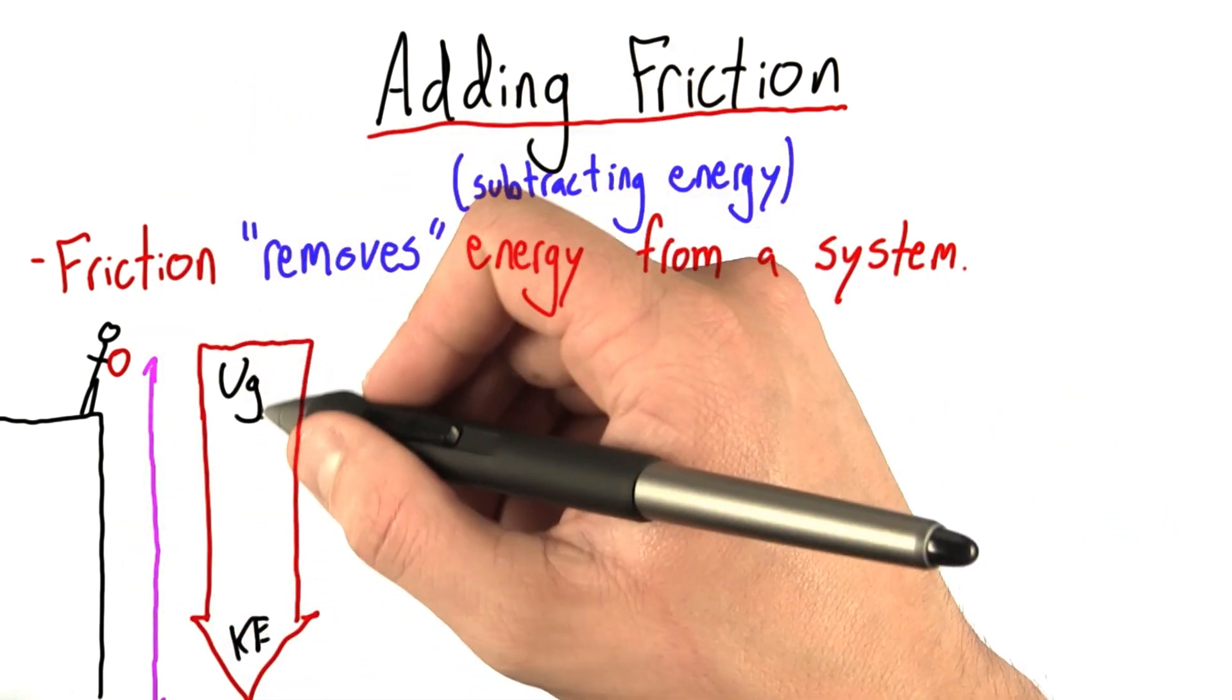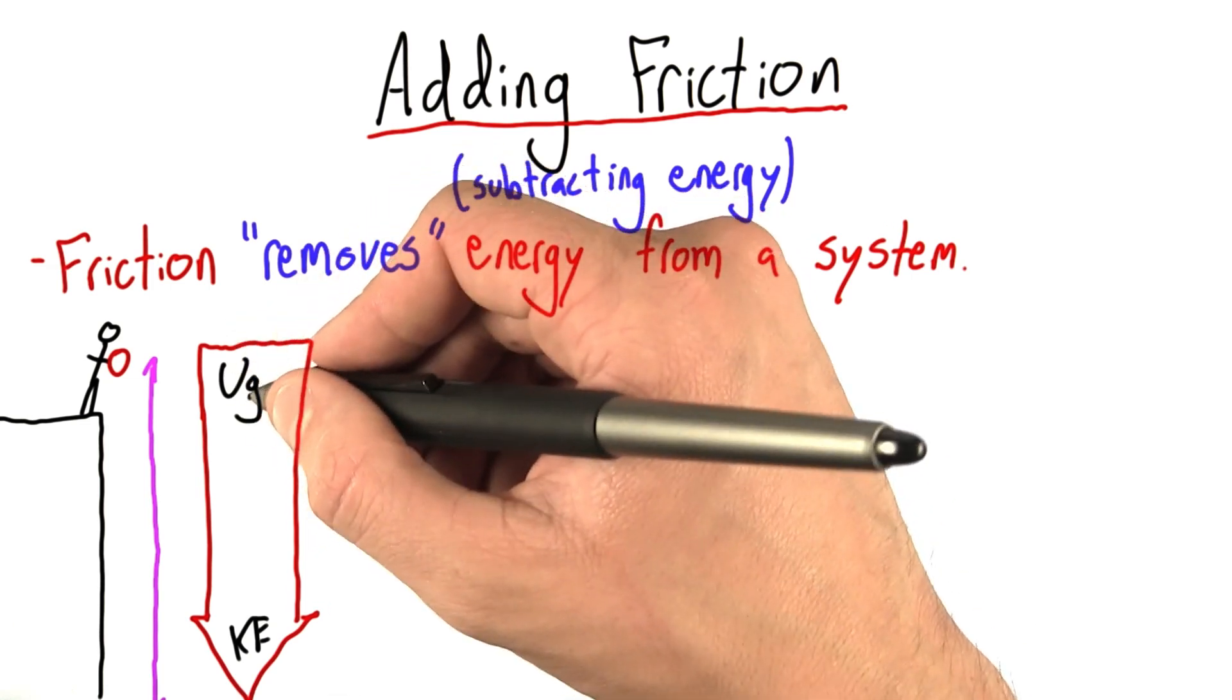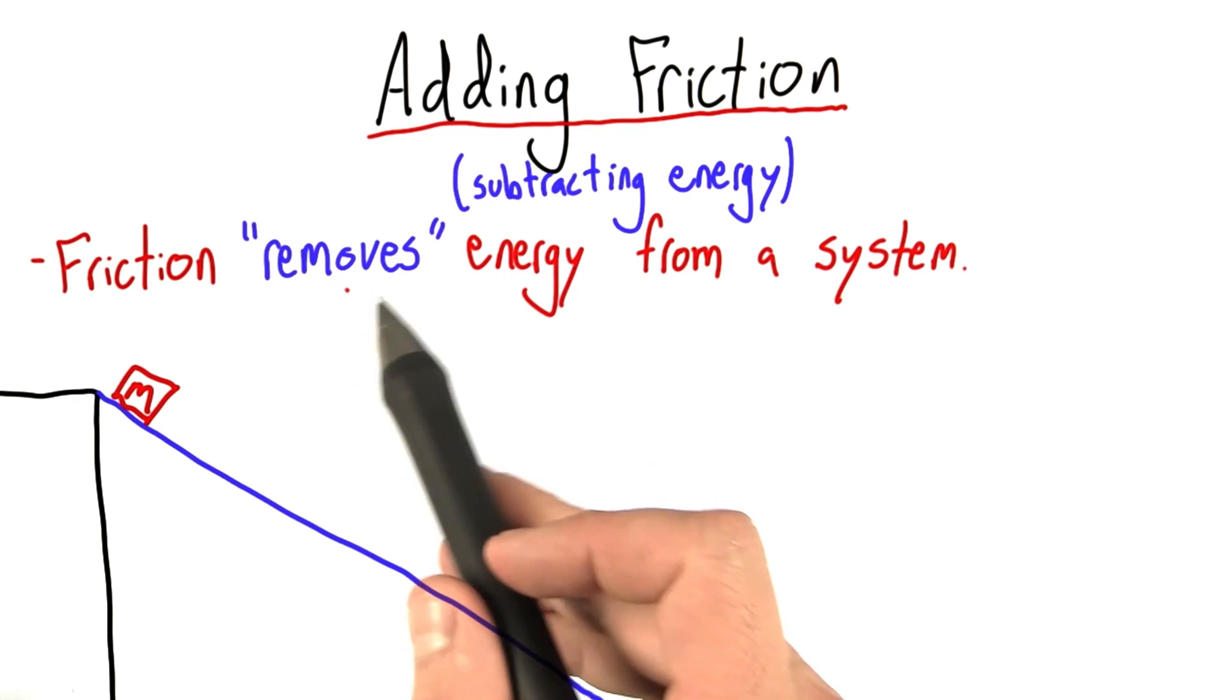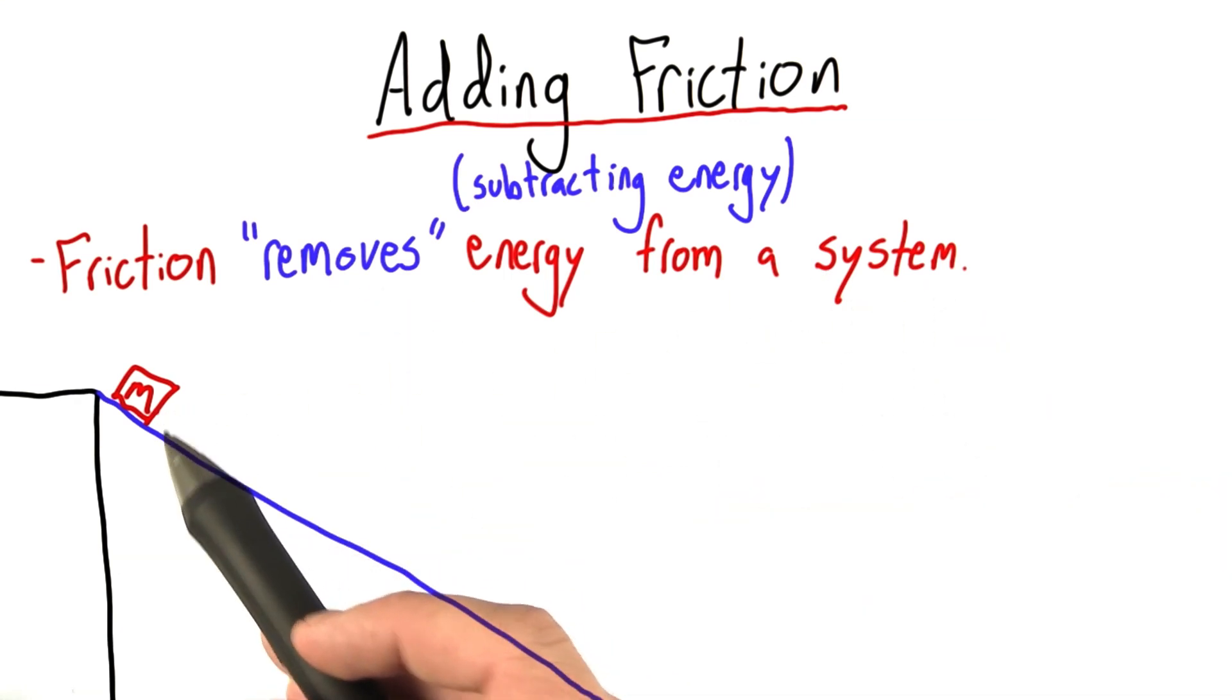But in reality, that's not what happens. All of the gravitational potential energy does not get converted to kinetic energy. So how does friction do this? How does it remove energy if energy can't be created or destroyed?